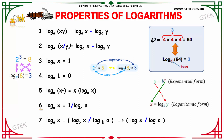By our sixth property, log x to the base a can be written in its reciprocal form by swapping the answer and the base value, as 1 by log a to the base x. By our seventh property, log x to the base a can be written in simple terms as log x to the base b divided by log a to the base b, which can be simplified further as log x by log a.